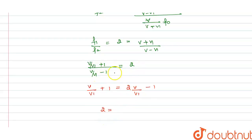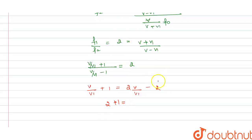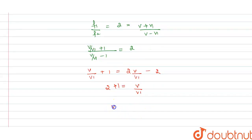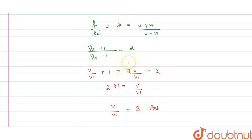Expanding: v/v1 plus 1 equals 2(v/v1) minus 2. Rearranging, 2 plus 1 equals 2(v/v1) minus v/v1, giving us 3 equals v/v1. So the velocity of sound in air divided by the velocity of the observer v1 equals 3.